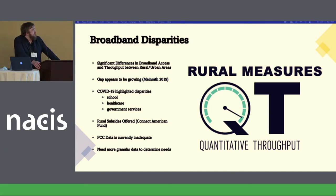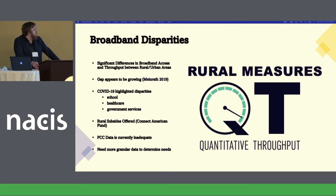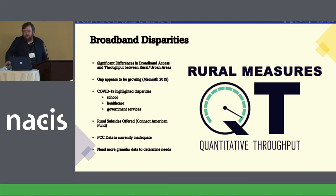We see disparities in school access — going to school online, health care, or government services. There are rural subsidies, and there have been since before 1996, but especially since 1996. But as we'll see, there are problems with the way they're allocated. The FCC data is bad right now — really bad — and it's intentionally bad in some ways because of the industry. We need more granular data to actually determine where our needs are.